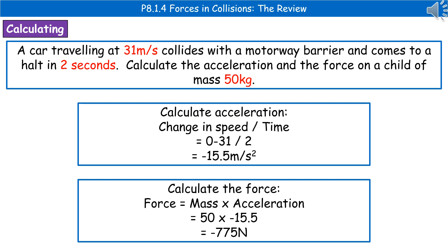Remember, the minus sign is important. We can then use that to calculate the force using force equals mass times acceleration. Substituting in a mass of 50 and acceleration of minus 15.5 gives an overall force of minus 775 newtons.